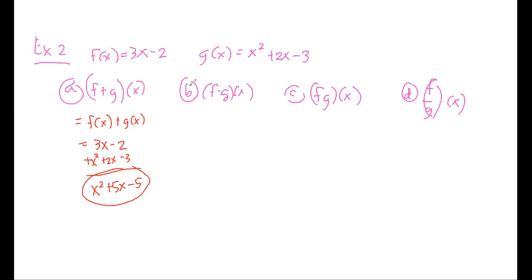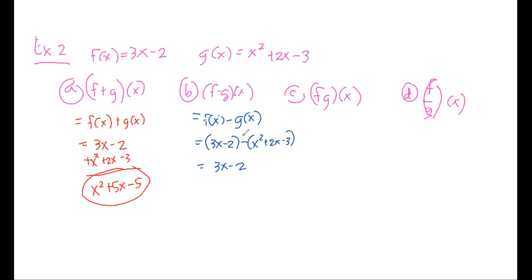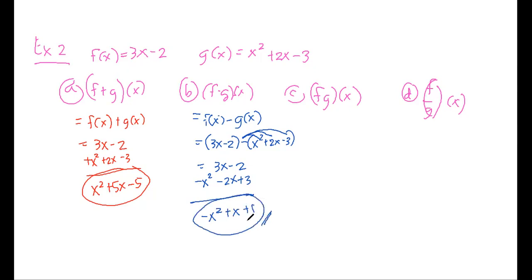Next, let's solve for the difference function, which is f(x) minus g(x). We have 3x minus 2 minus (x squared plus 2x minus 3). We copy f(x) and distribute the negative sign to the terms inside g(x): negative times x squared is negative x squared, negative times 2x is negative 2x, and negative times negative 3 is positive 3. The difference function is negative x squared plus x plus 1.